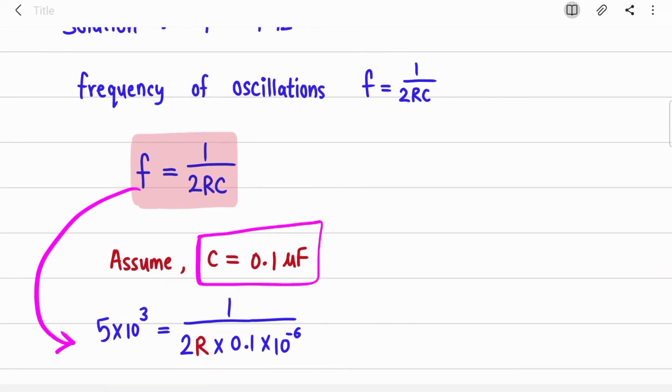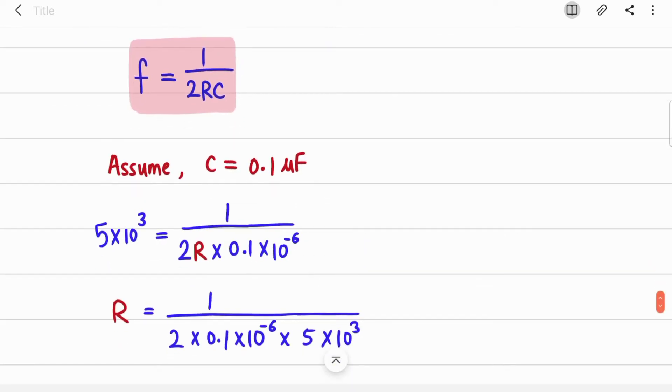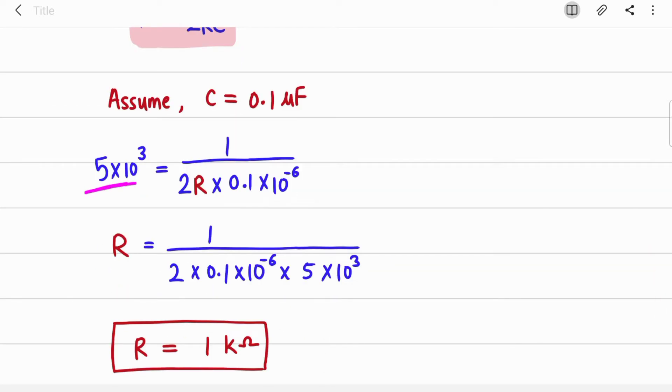Frequency is 5 kHz. I assume the capacitor's value which is 0.1 microfarad, so the unknown variable over here is R. Just rearrange the equation - this 5 kHz will go to right hand side and come in denominator. Just put this in calculator and you will get the value of R which is 1 kΩ.